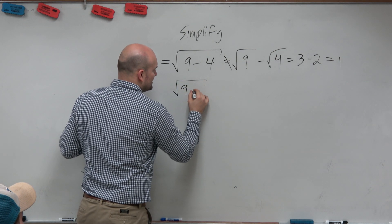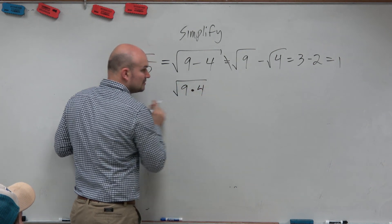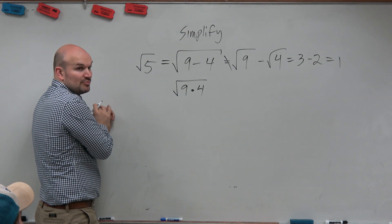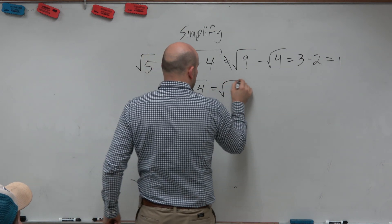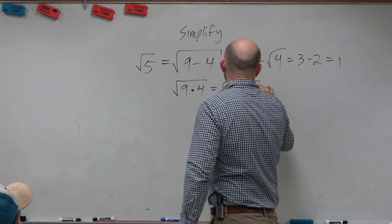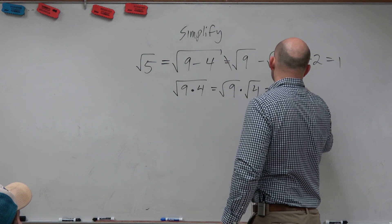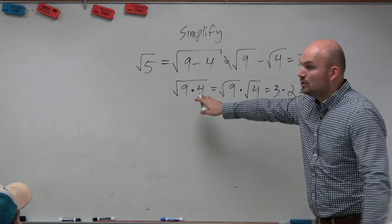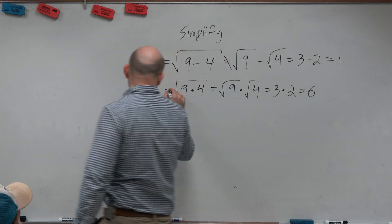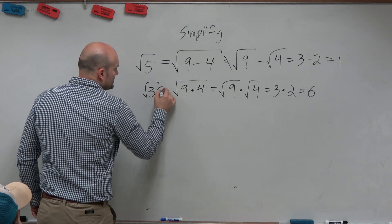For instance, if I had the square root of 9 times 4, we can actually break that up. That's part of the rules of the radicals. You can break this up into the square root of 9 times the square root of 4, which is 3 times 2, which is equal to 6, which, if we apply the order of operations here, is the square root of 36.